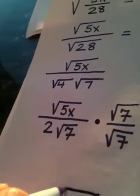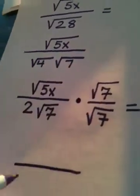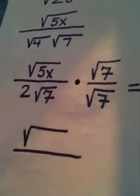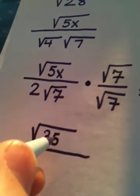Look what happens in the numerator. A square root times a square root becomes a single square root, and 5x times 7 is 35x.